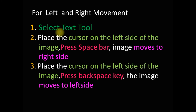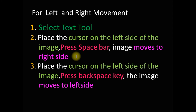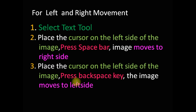To move the image left or right, select the text tool and place the cursor on the left side of the image. Press the spacebar to move the image to the right side. To move it back to the left, place the cursor on the left side of the image and press the backspace key — the image moves to the left side.